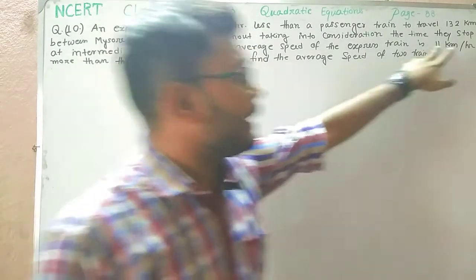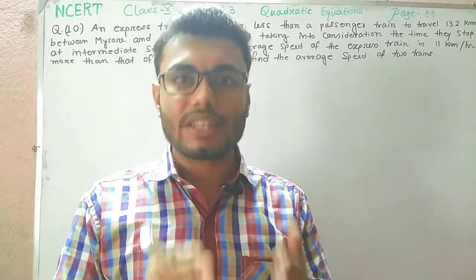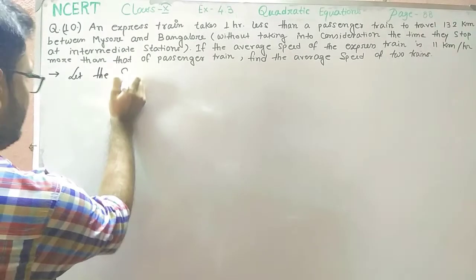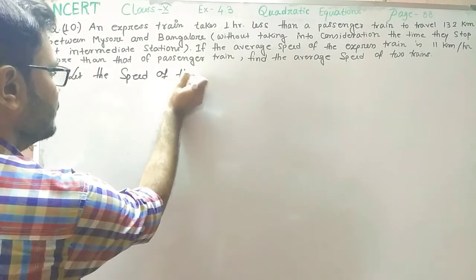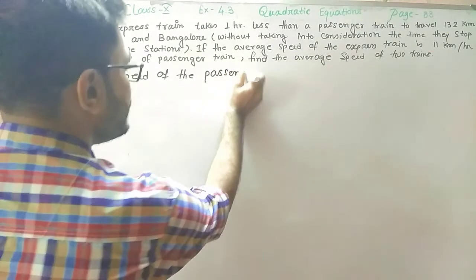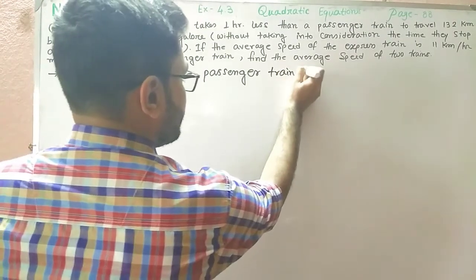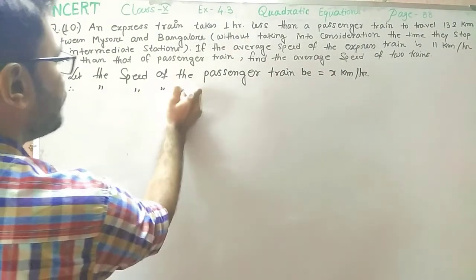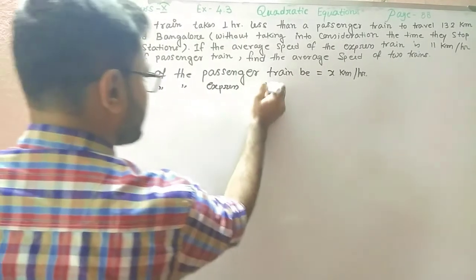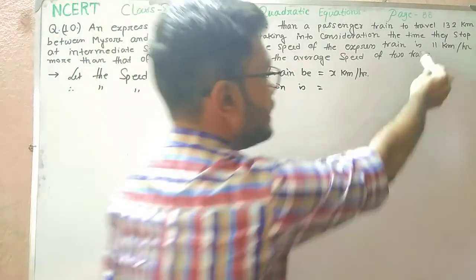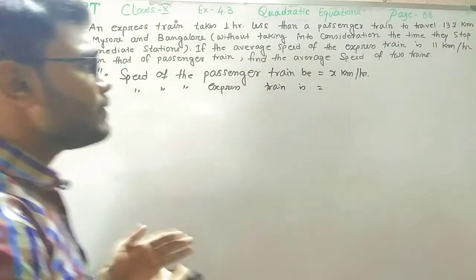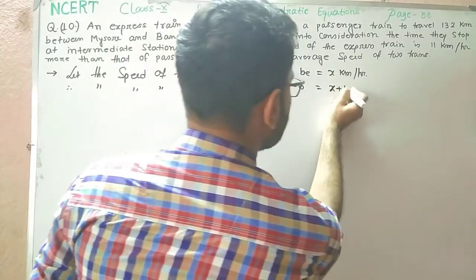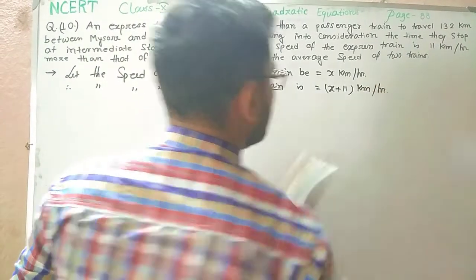You can see that they are connected by one number — the speed of the express train is 11 more than that of the passenger train. So, let the speed of the passenger train be x km per hour. Therefore, the speed of the express train is x plus 11 km per hour.